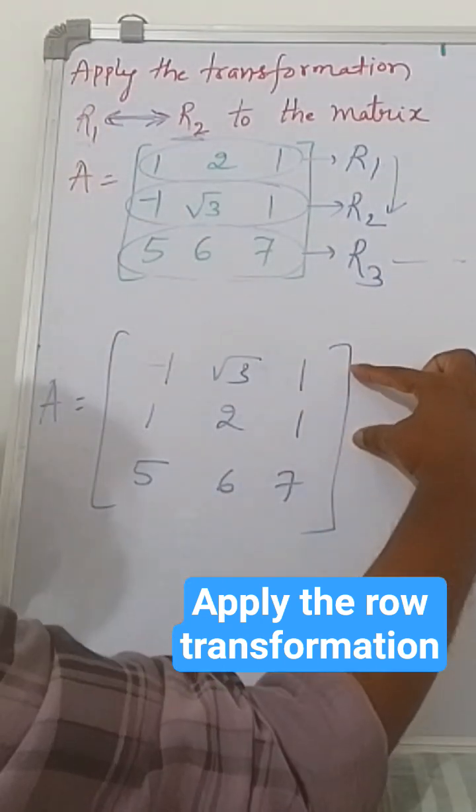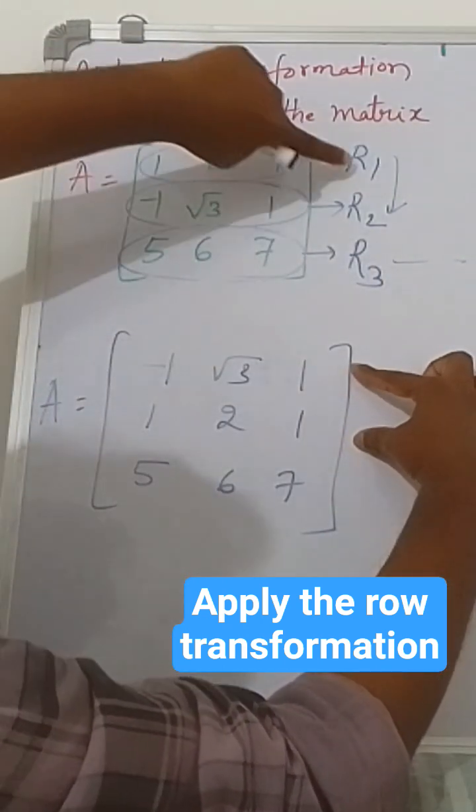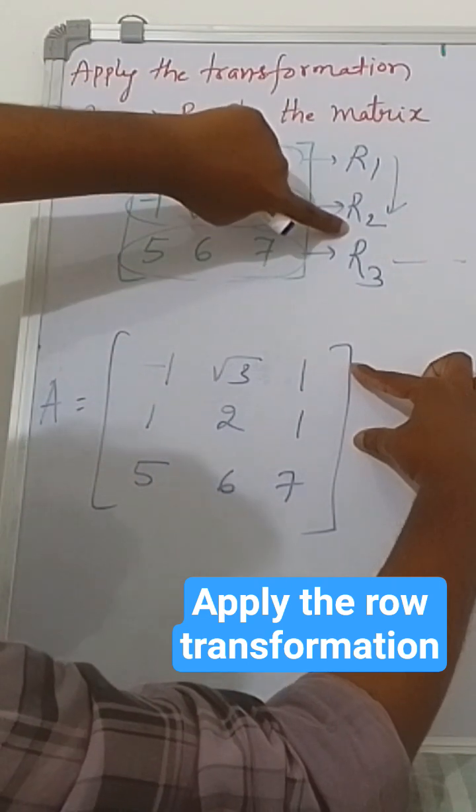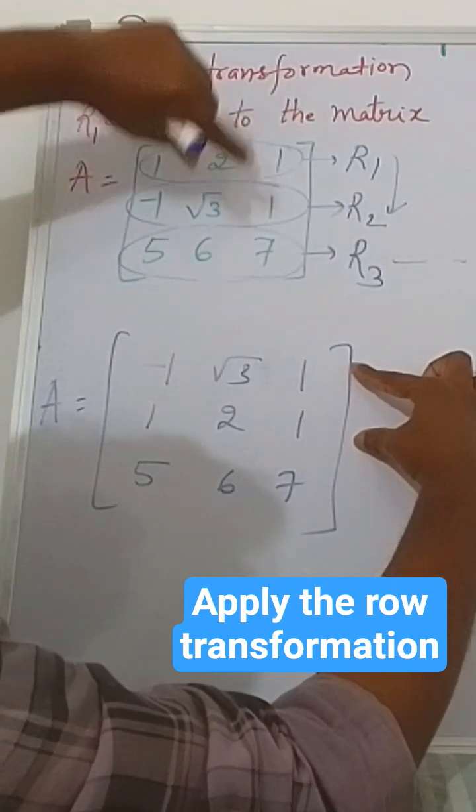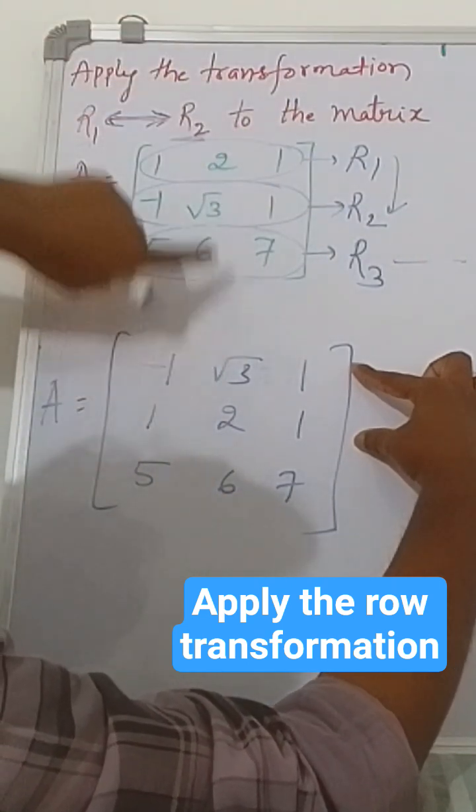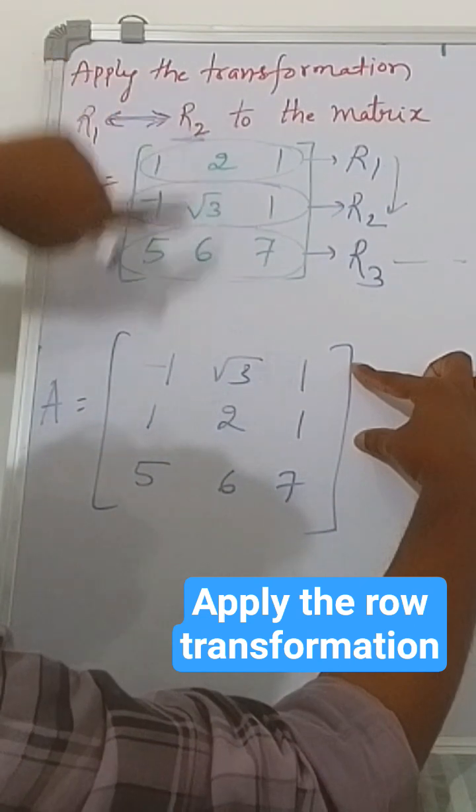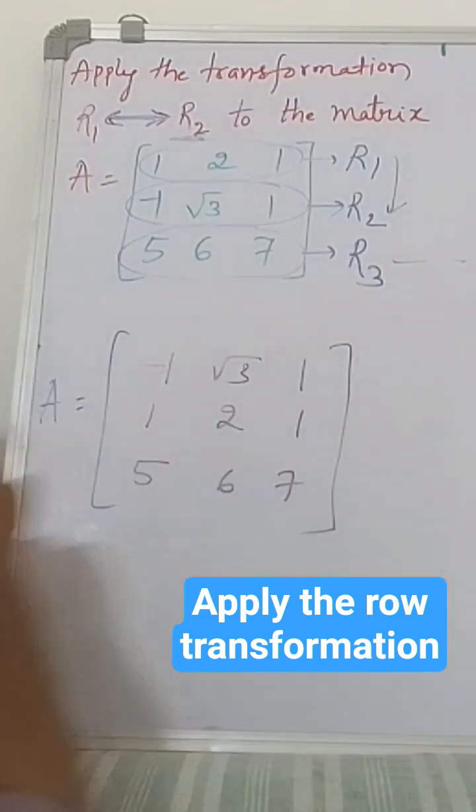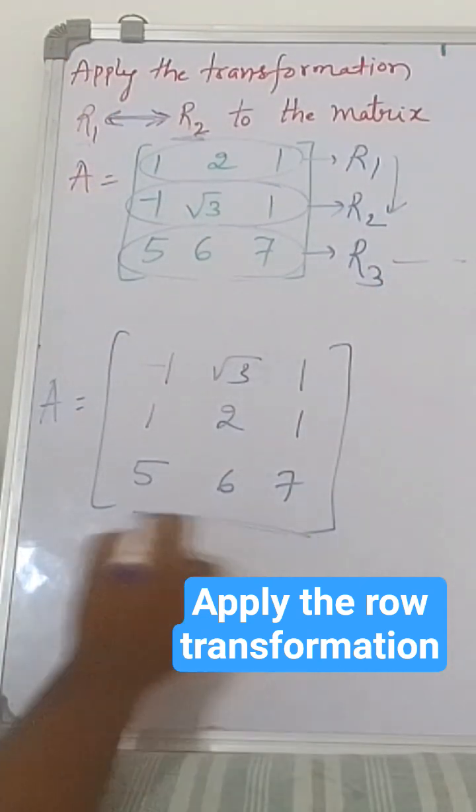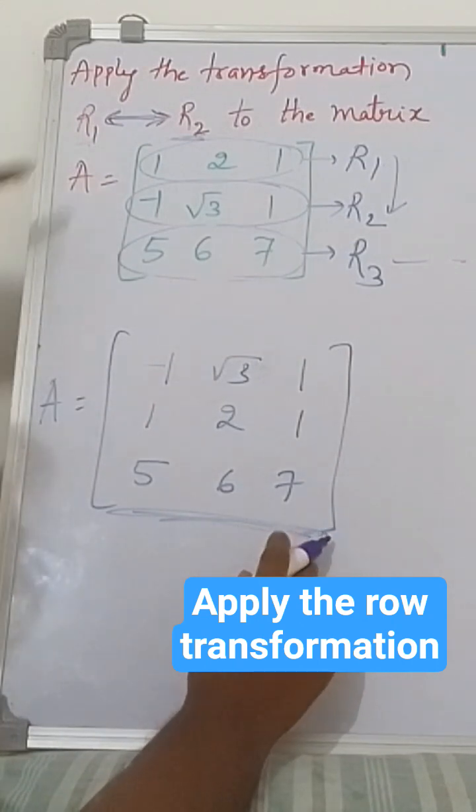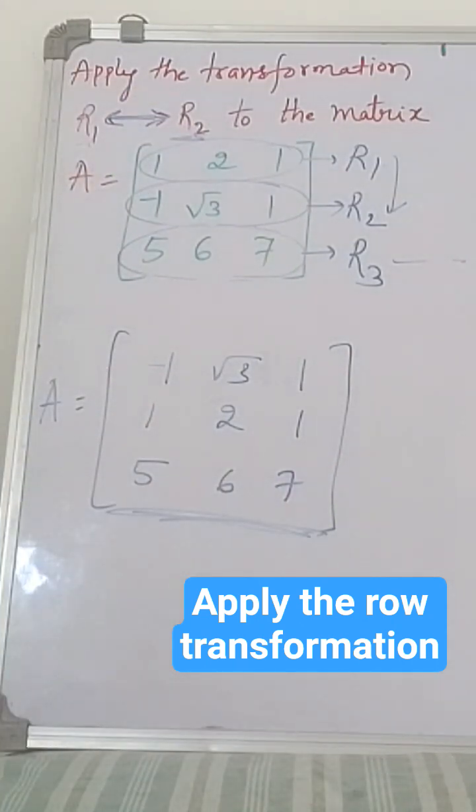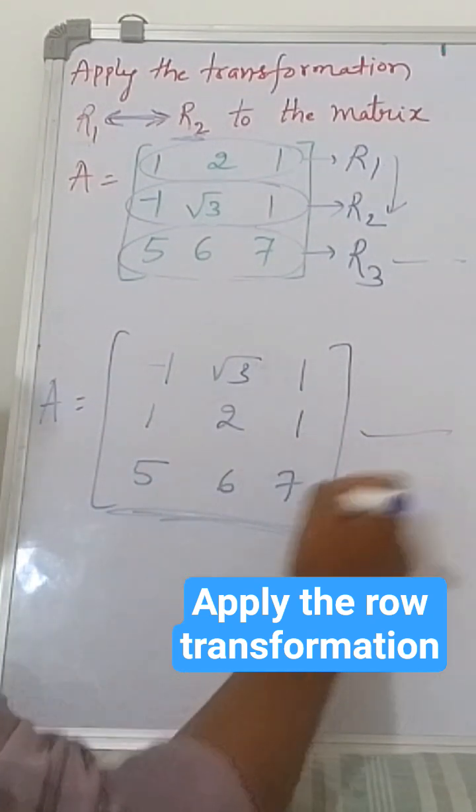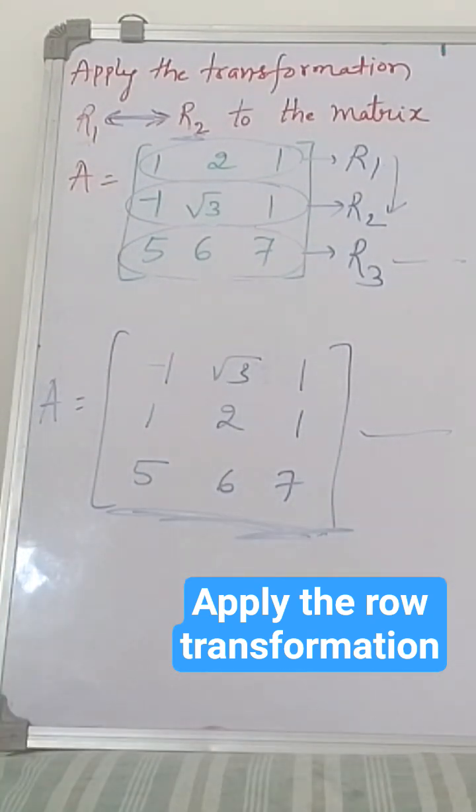You can see we have interchanged row one and row two. This came here down, this went up here. So this is the transformation of r1↔r2. This is the answer. Thank you, subscribe.